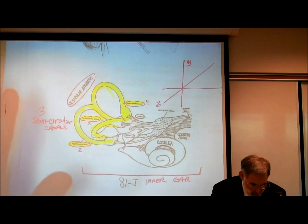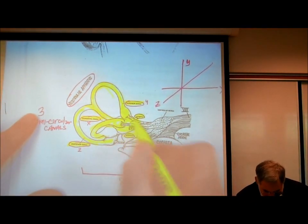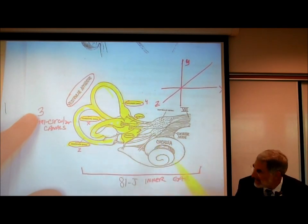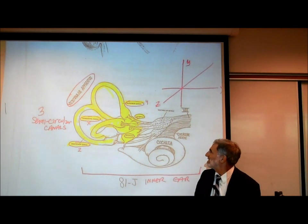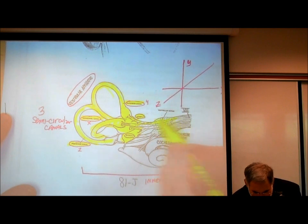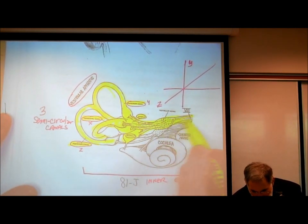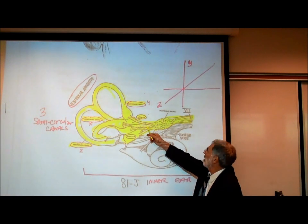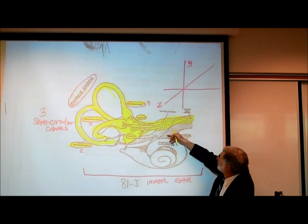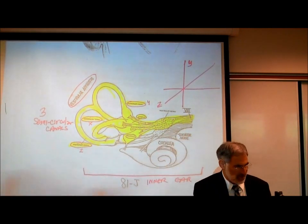In addition, there's something labeled the utricle and the saccule. These structures form the vestibular apparatus. Coming off all of these structures is the vestibular nerve, inside which are millions of myelinated nerve fibers that join up with the cochlear nerve. Together, they form the vestibulocochlear nerve, or cranial nerve number eight.